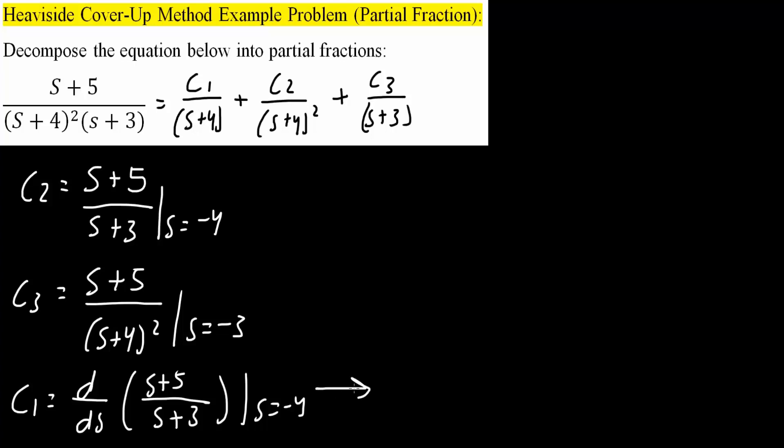So let's take the derivative of this. So it's going to be the quotient rule. So we would get s plus 3 times derivative of the top, so 1, minus the top, s plus 5 times the derivative of the bottom, so simply 1, divided by s plus 3 squared, and I'm going to plug in s is equal to negative 4.